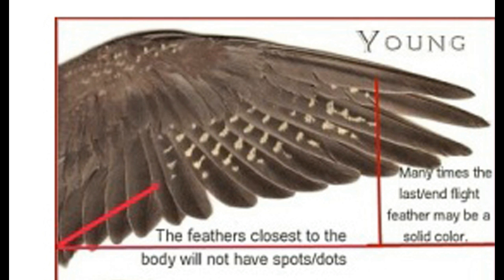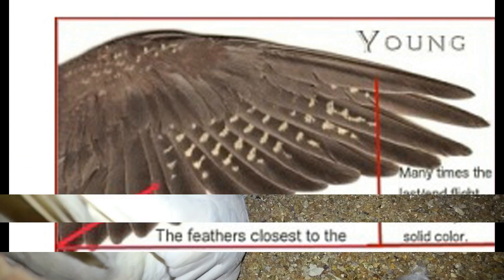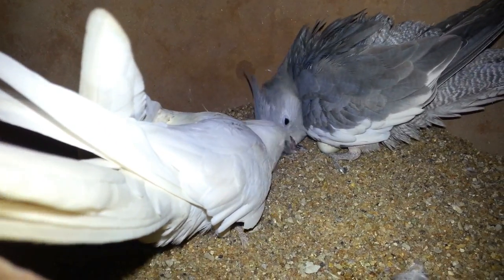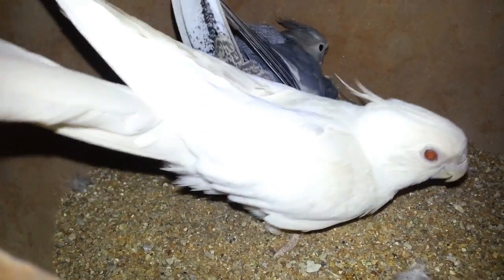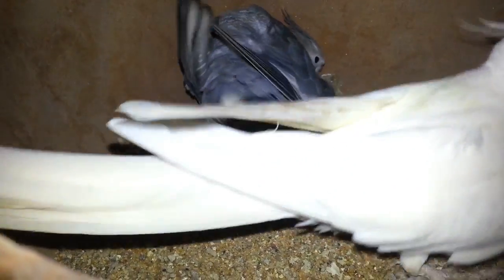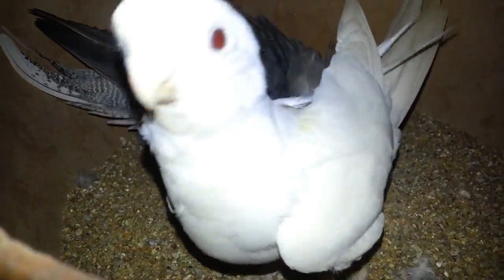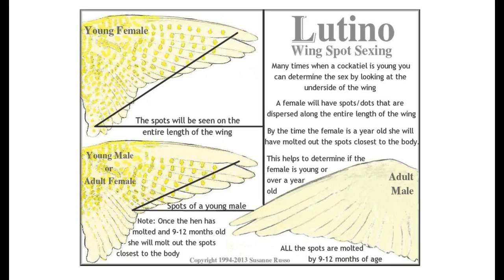You will see all the birds in the cocktail — grey, albino, lutino, white face, etc. You will see the wings open, and the female is a darkness.